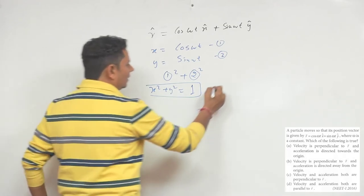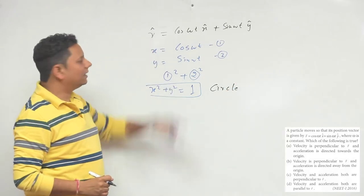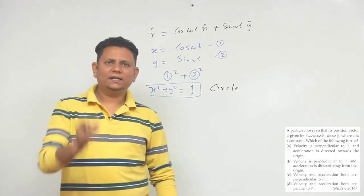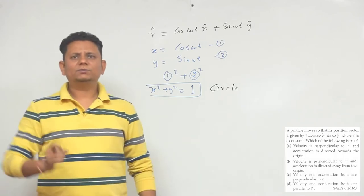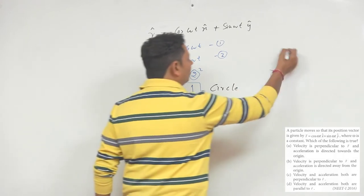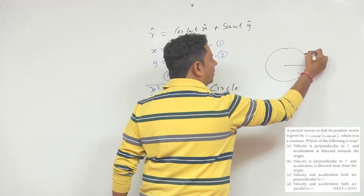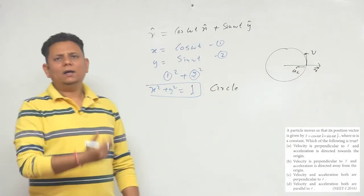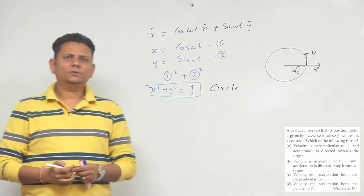This equation represents a circle. So our particle is undergoing circular motion with radius 1. In circular motion, velocity is always perpendicular to the r vector, and acceleration is always directed toward the center or origin. Based on this, we can say that option A is correct.